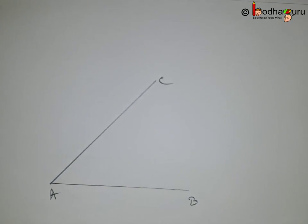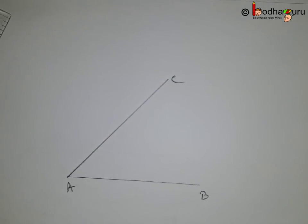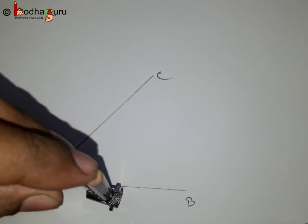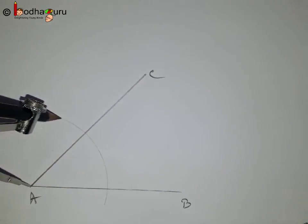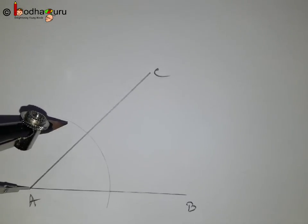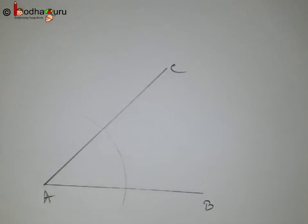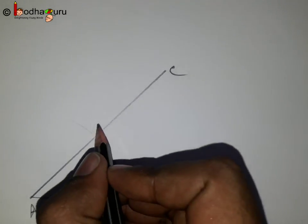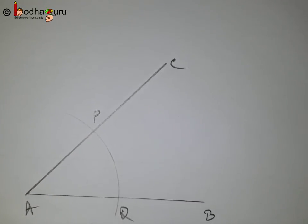Here, we have an angle, angle BAC. We can take any convenient radius and put the needle of the compass at vertex A to draw an arc that intersects the arms of the given angle at point P and point Q.